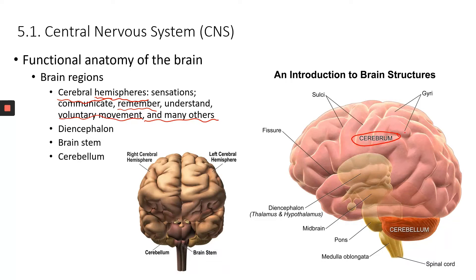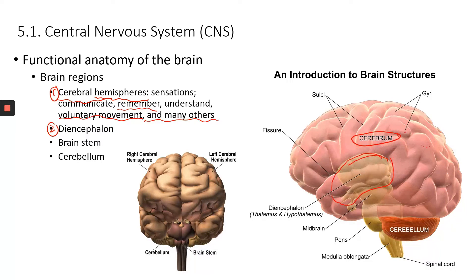The cerebral hemispheres appear in a kind of pink, salmon color. The second region is called the diencephalon. It mostly consists of the thalamus and hypothalamus. The thalamus is more like a relay center for information going into the brain, but the hypothalamus performs a lot of critical functions — we'll cover that on the next slide.